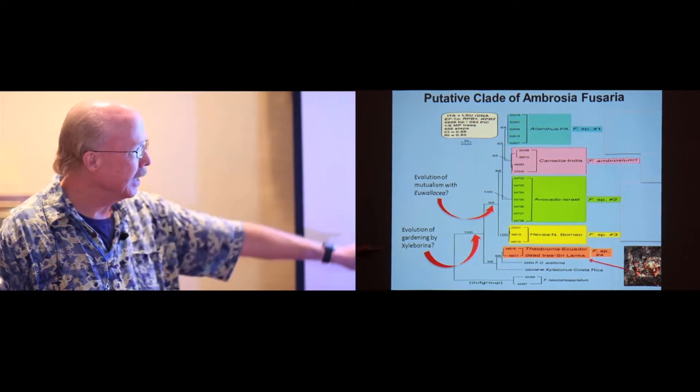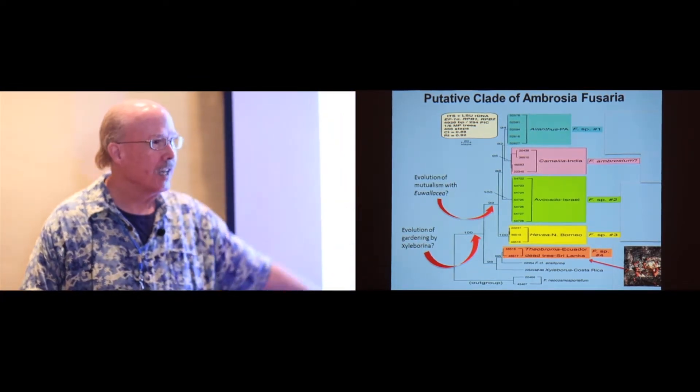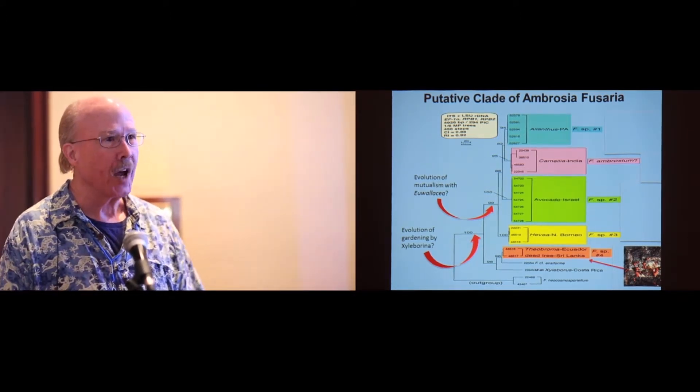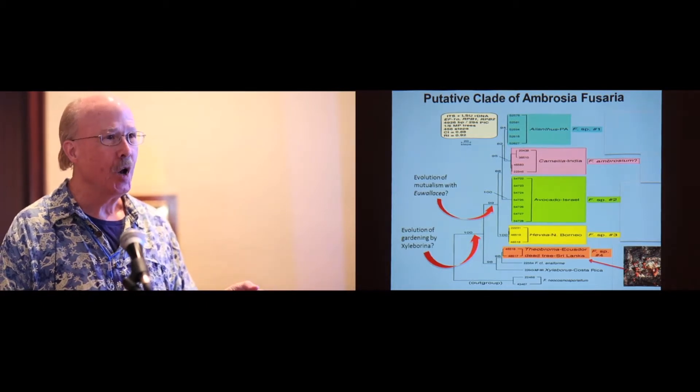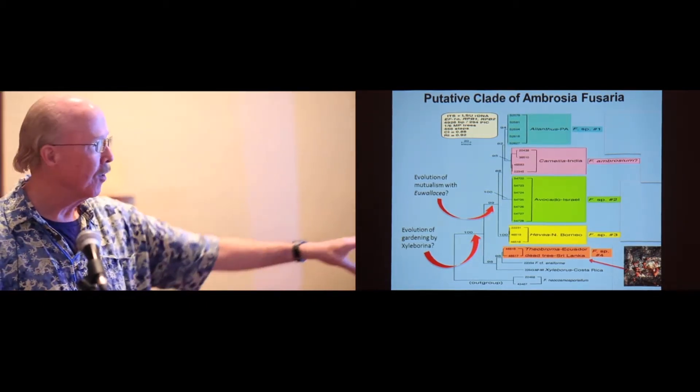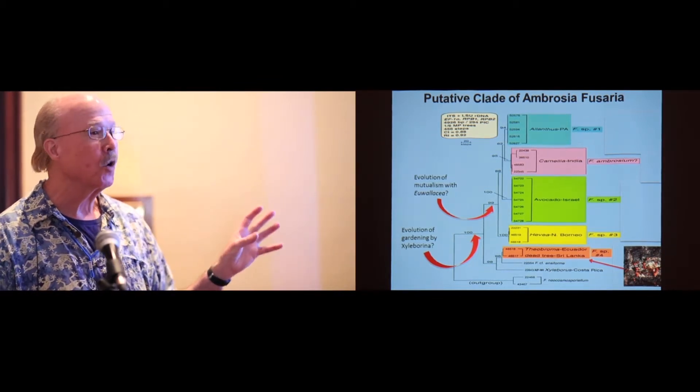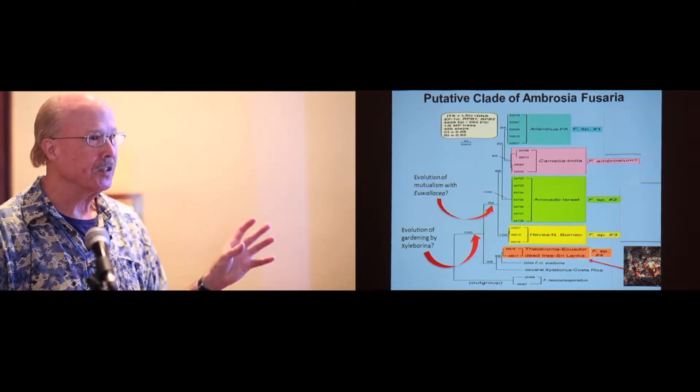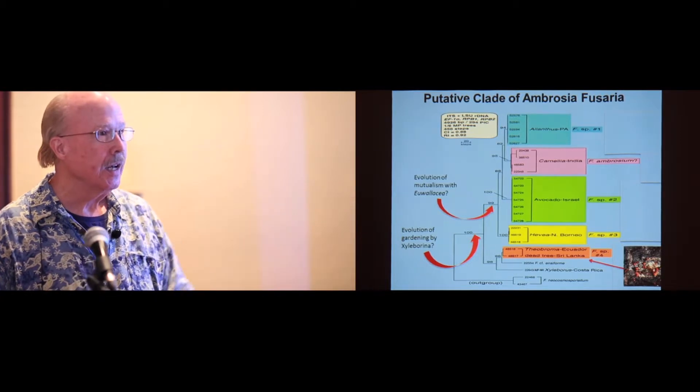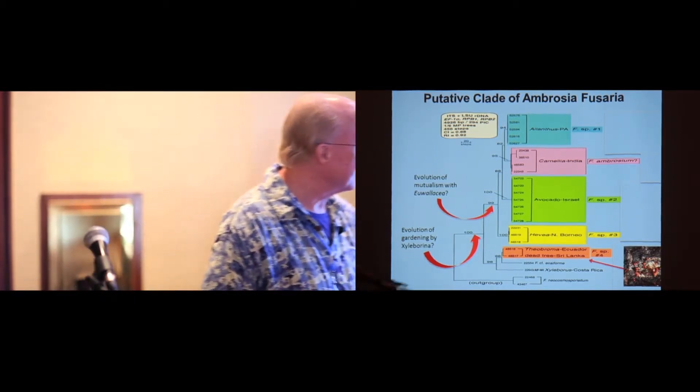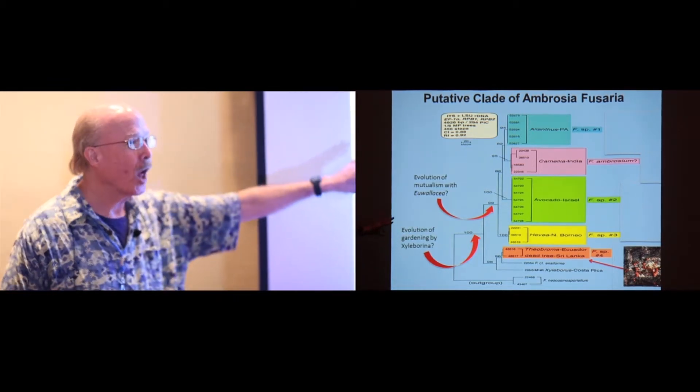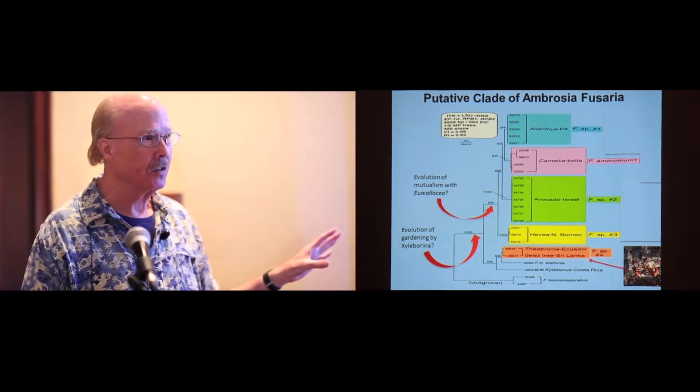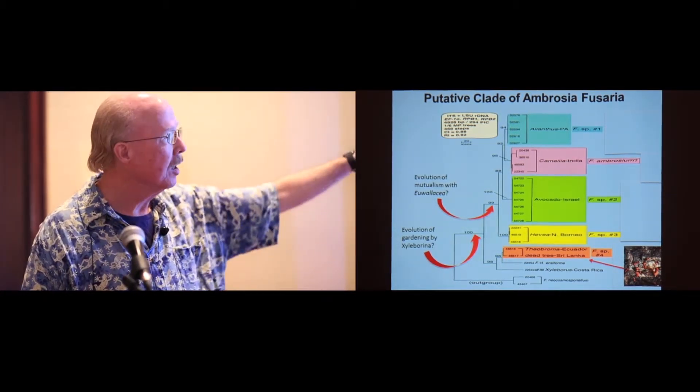The two other lineages, one from rubber tree in Borneo and the other one from Theobroma in Ecuador and from an unknown dead tree in Sri Lanka, we think are probably farmed by beetles. But the people who collected them were like me and they were focused on the fungus and they just didn't pay any attention at all to whether or not it was actually associated with a beetle. I've pasted in an insert to emphasize that the isolate from the dead tree in Sri Lanka was actually recovered from the sexual stage produced by these fungi. It's difficult to tell from the image, but when these go through a sexual cycle, they produce a little pear-shaped fruiting body, maybe a millimeter in size, that's usually bright red. So we know at least this is a sexual species.